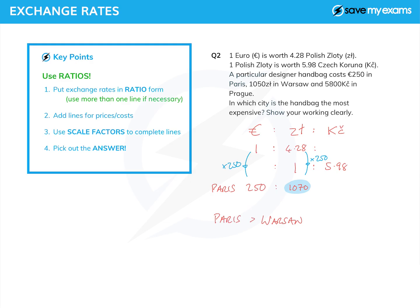Now if we convert the Paris price into koruna and see whether it's more expensive in Prague or not — well, we've got the Paris price in zloty and we know the exchange rate between zloty and koruna. We multiply by 1070 on both sides, and that gives us the price of the Paris handbag in koruna: 5.98 times 1070 is 6398.6, which is quite a lot bigger than the Prague cost of 5,800 koruna. So Paris is also more expensive than Prague, and therefore Paris is the most expensive.